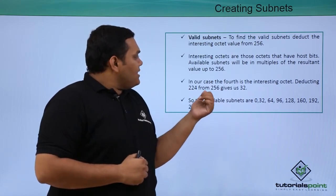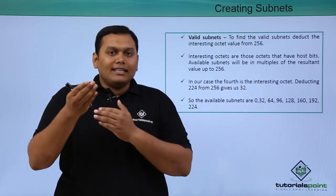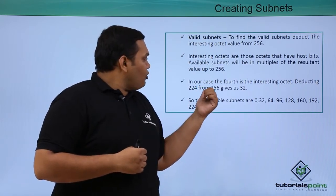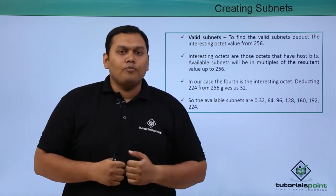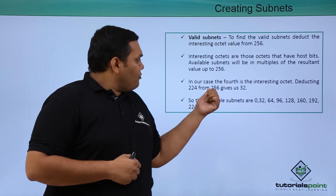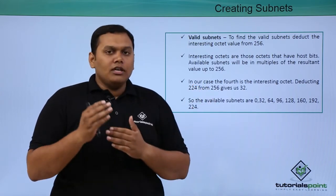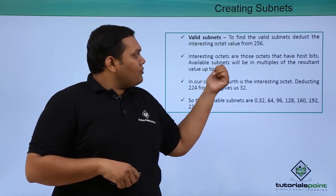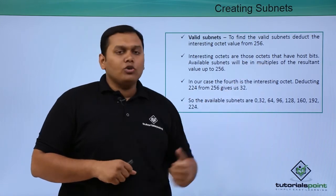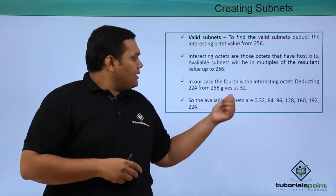You can see here in case the fourth is the interesting octet, deducting 224 from 256 gives you 32. So here out of 256 we deduct 224 because the valid subnets actually have only the host bits here. So we get 32.